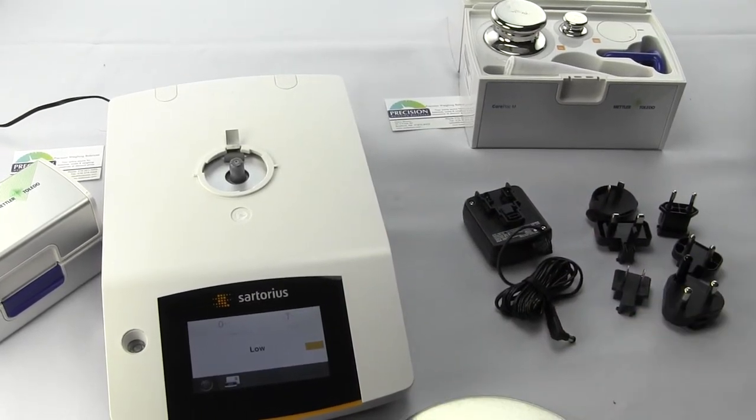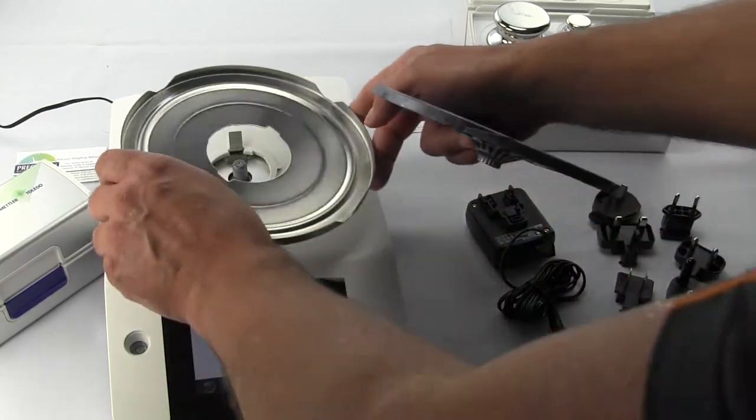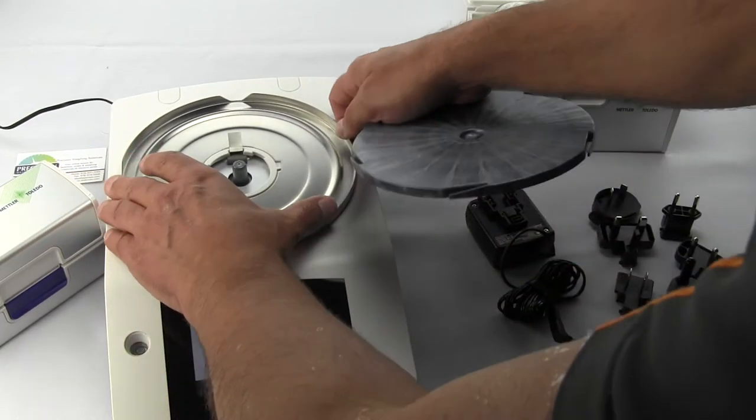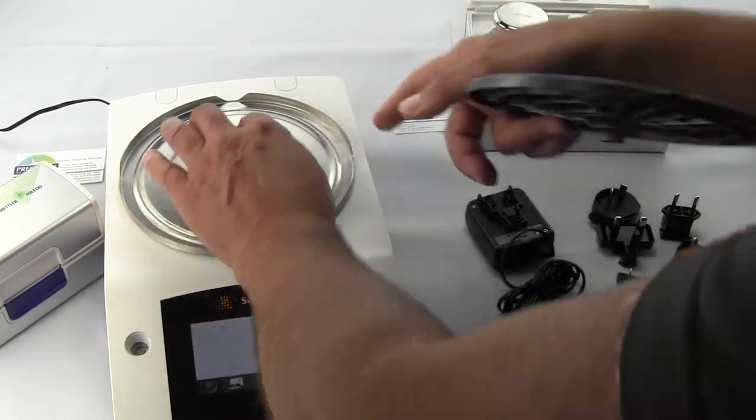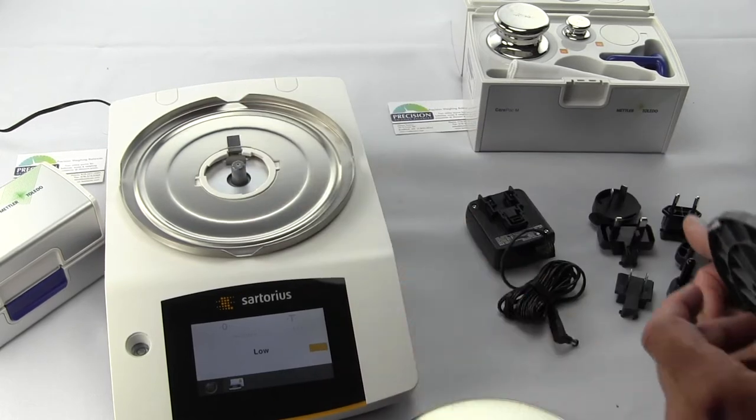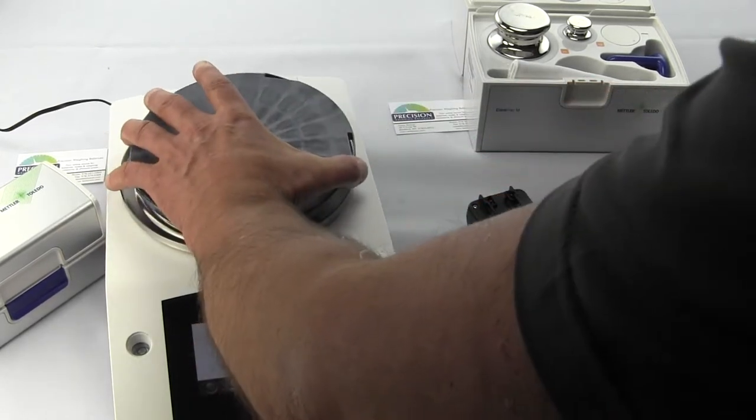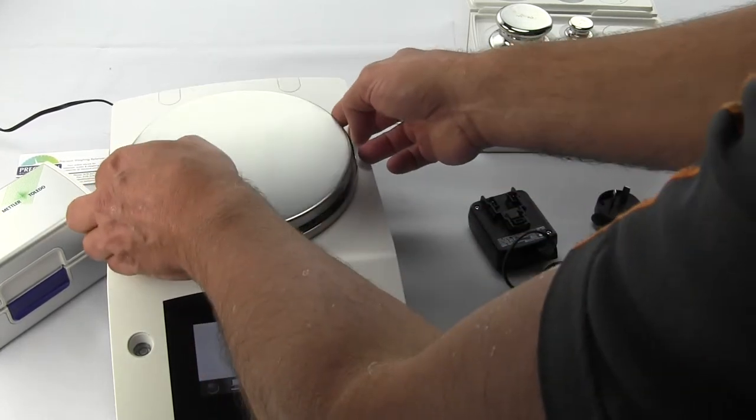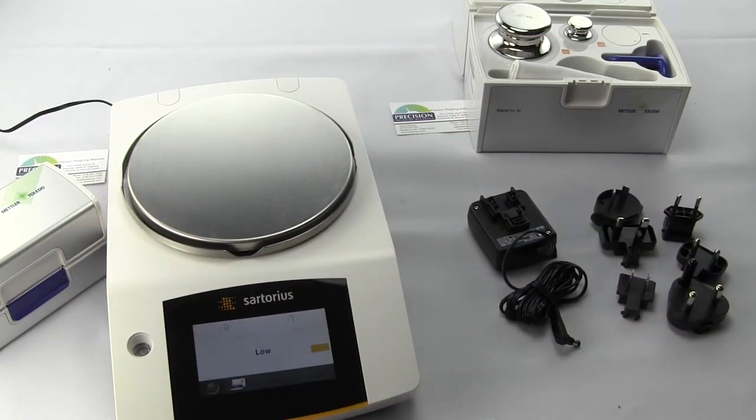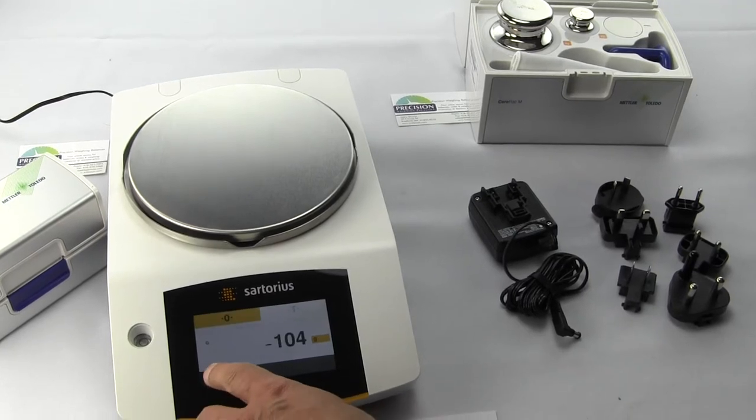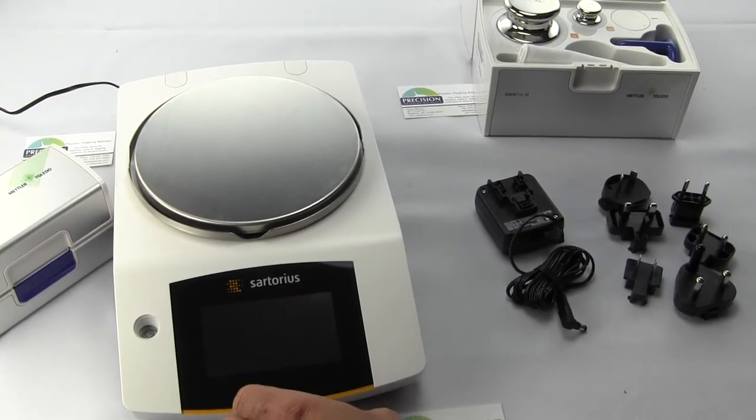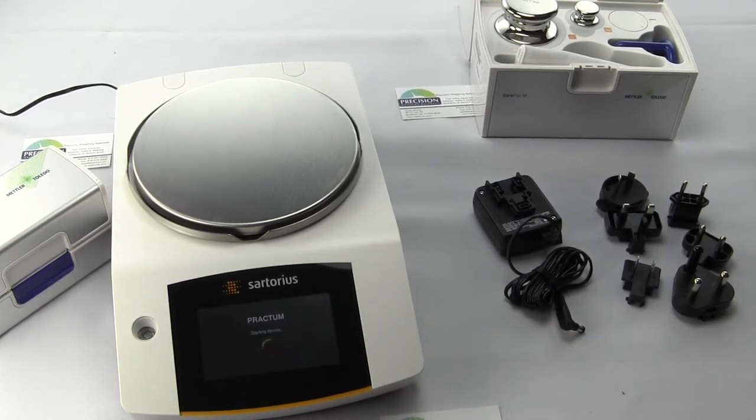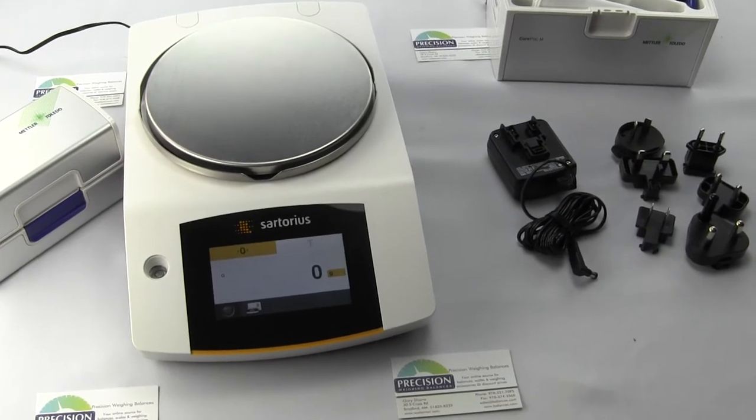When you install your balance, you put on the spill guard—that tab goes down to ground it—then the European support for your balance, then your stainless steel platform. You'd have to reset your balance. We'll power it down, power it back up, and you can see the Practum does its power up sequence and you're back to zero.